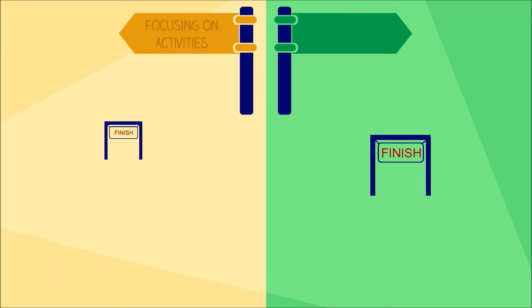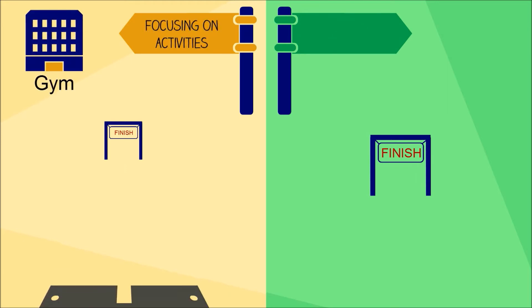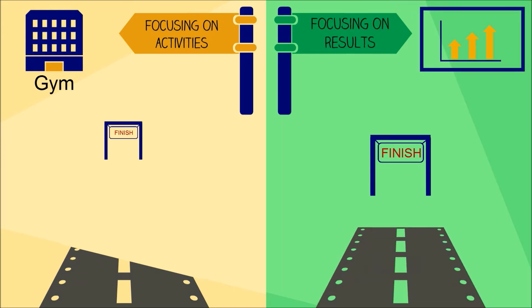In order to achieve your goal, you'll need to increase your endurance. So you can choose the activity of going to the gym twice a week, or you can focus on the result of running an additional mile each week.